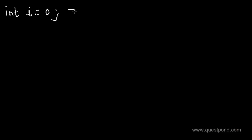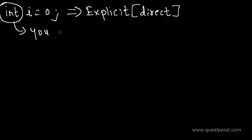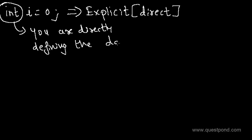When you define a simple data type in .NET, like int i, it's called an explicit declaration of a data type. In other words, we can say it's a direct declaration — you are actually specifying what data type you are interested in.